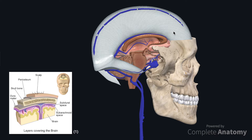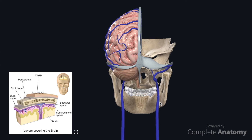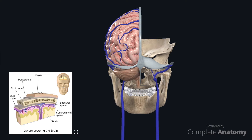For example, we have the falx cerebri here that forms a partition between the left and the right cerebral hemispheres. We can see the tentorium cerebelli which forms a partition between the upper cerebrum and lower cerebellum. We have the falx cerebelli which forms a partial partition between the left and right cerebellar hemispheres.